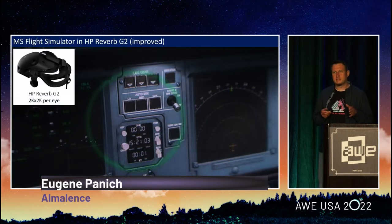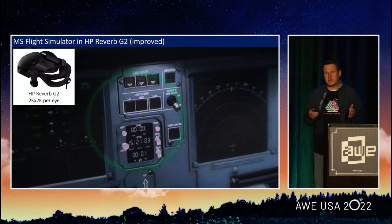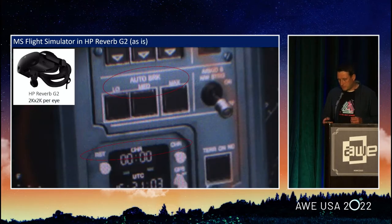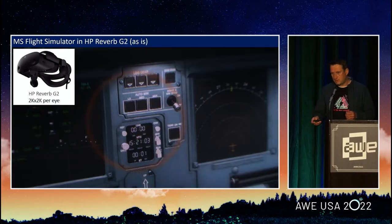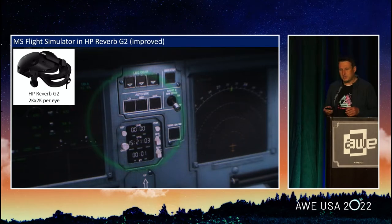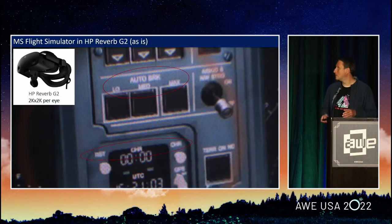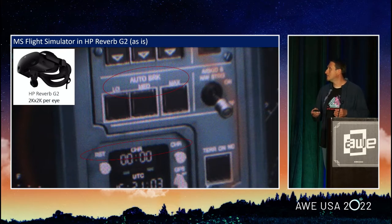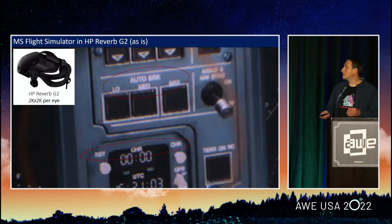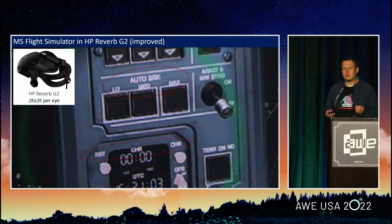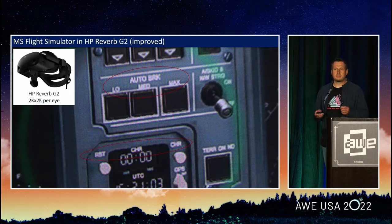This picture was taken inside the HP Reverb G2, one of the latest and greatest VR displays nowadays, running Microsoft Flight Simulator. And this picture was taken with the same device improved in a certain way. Let's take a closer look. The HP Reverb G2 — S is improved. Quite a difference in quality, in text readability. So why wouldn't that latest and greatest VR display show us good picture quality out of the box? And what exactly did we have to improve to make it better?